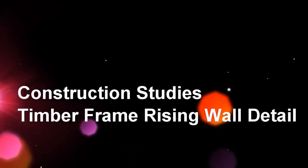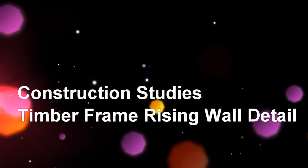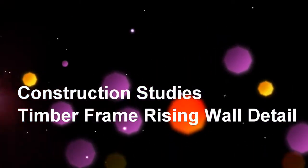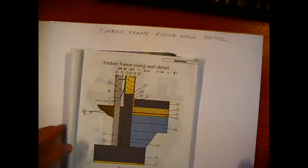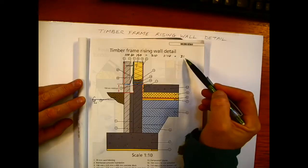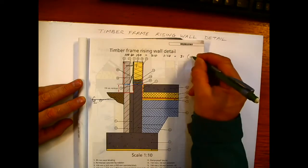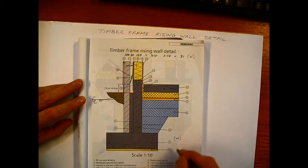In this video we're going to take a look at the timber frame rising wall detail, which is not unlike our traditional strip. We're just going to look at some of the sizes to start the thing off. We need to have our foundation and the sizes here: 100mm outer leaf, 150mm for the timber frame underneath.